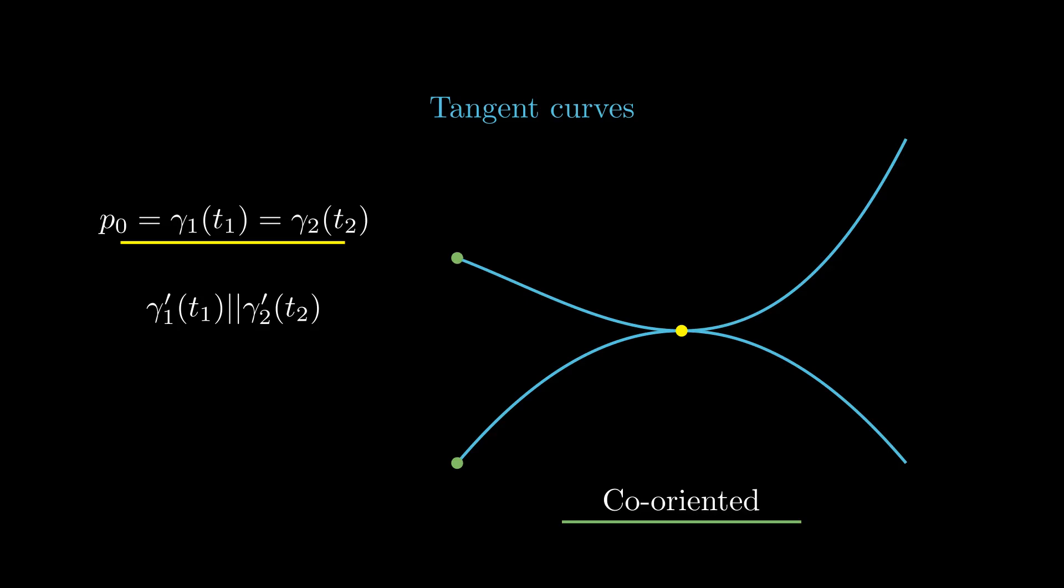In such a case, we say that the curves are co-oriented if these velocity vectors point in the same direction, and counter-oriented if the velocity vectors point in opposite directions.